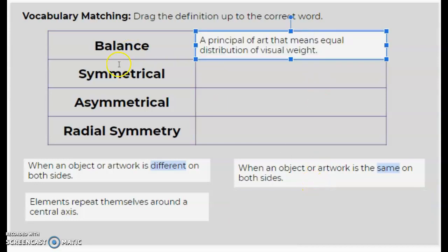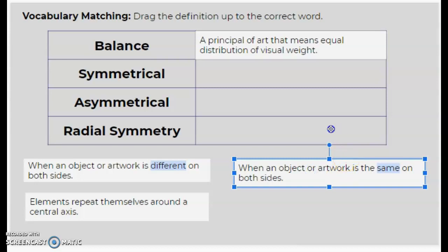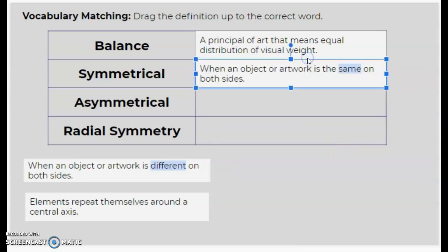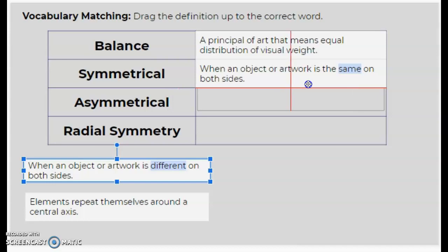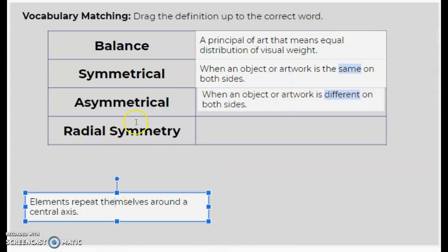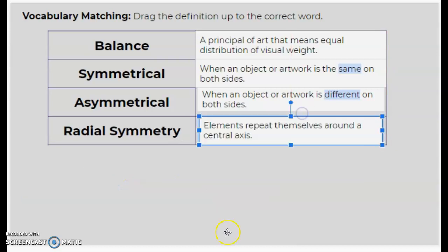Symmetrical is when an object or artwork is the same on both sides. Then asymmetrical, so if it has that 'a' in front of it, you know that means it's different on both sides. And that leaves radial symmetry, where objects repeat themselves around a central axis.